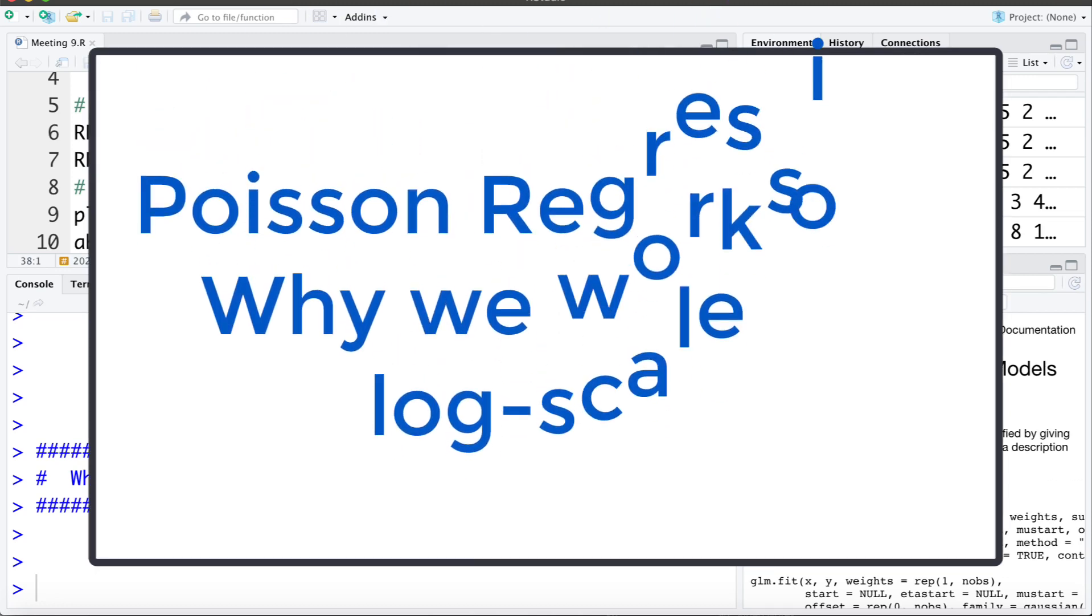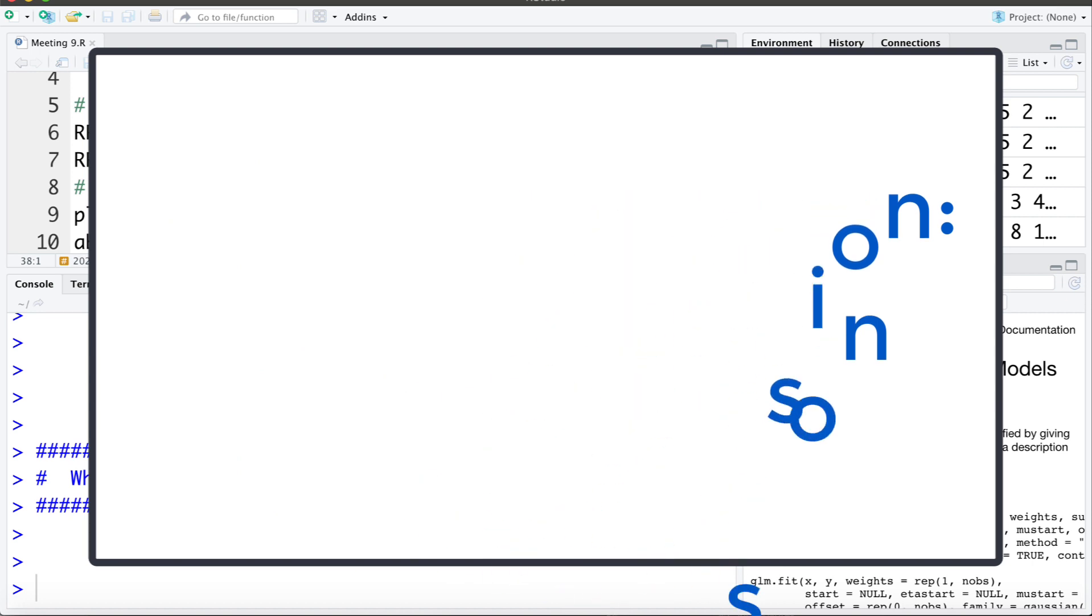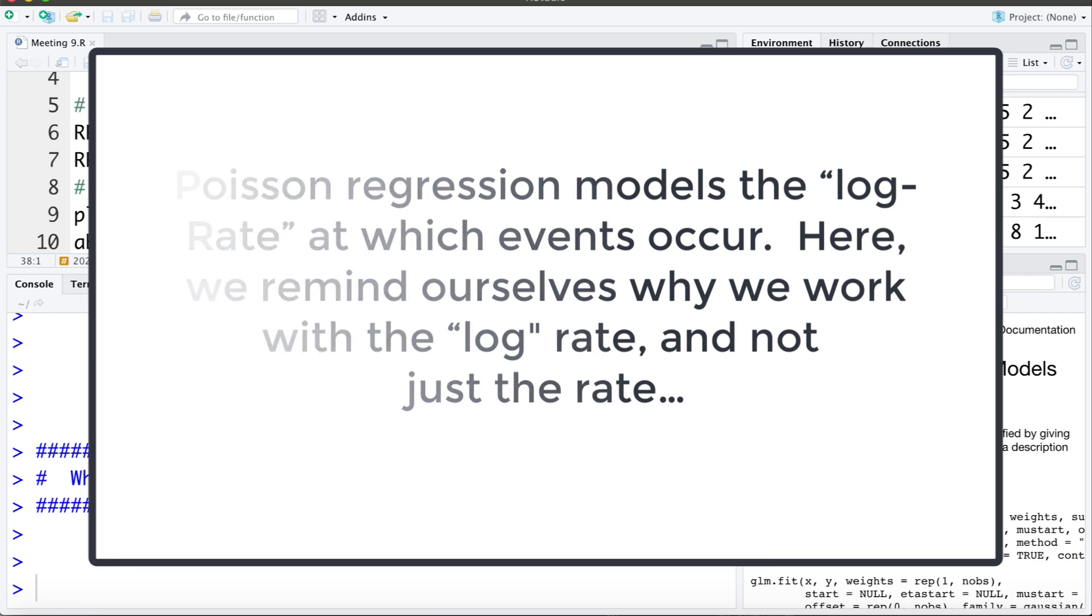We're now beginning a discussion of Poisson regression or log linear regression. Similar to logistic regression, we're going to be working on the log scale - that is, modeling the log rate at which events occur. Let's remind ourselves of why we work on the log or natural logarithm scale.